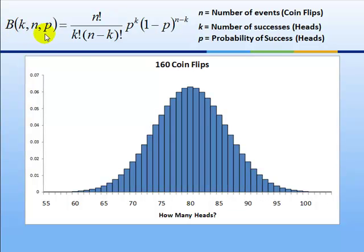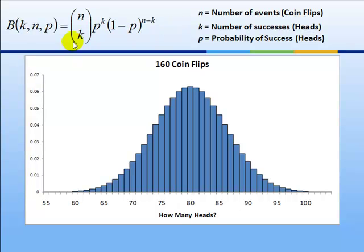The probability mass function has three parameters. K, which is the number of successes or the number of heads. N, the number of events — how many coins did you flip. And P, what is the probability of success — that is, the probability of getting heads, which is 0.5 in this case, but it could be anything from 0 to 1. This fraction is called the binomial coefficient, which occurs in many situations. N factorial means n times n-minus-1 times n-minus-2, all the way down to 1. So if n were 4, four factorial would be 4 times 3 times 2 times 1. The binomial coefficient has its own notation: if we have n events, how many different ways are there to get k successes? Then we multiply the binomial coefficient times p to the kth power, times 1 minus p to the n-minus-k power.